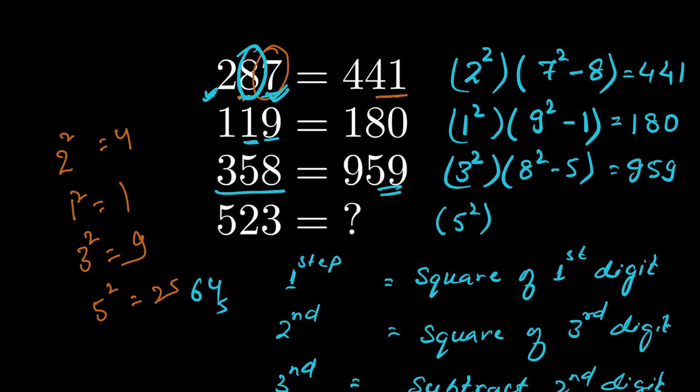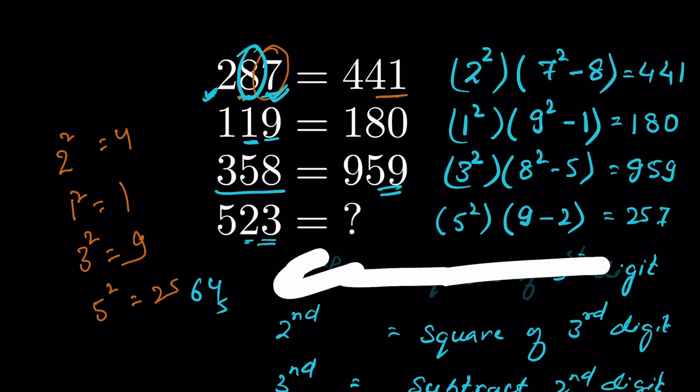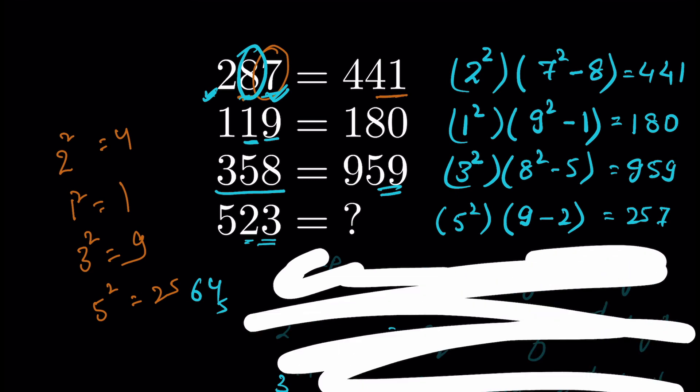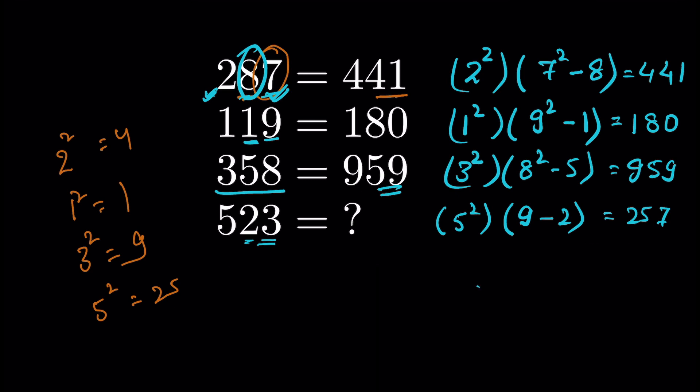Here again it will be square of 5. Square of this first digit, 5 squared, then square of third digit, 3 squared is 9, and minus 2. So 5 squared is 25, and 9 minus 2 is 7. If that is the case, then our answer should be 257. What is your answer? Let me know in the comment section and how did you solve it. Thanks for watching.